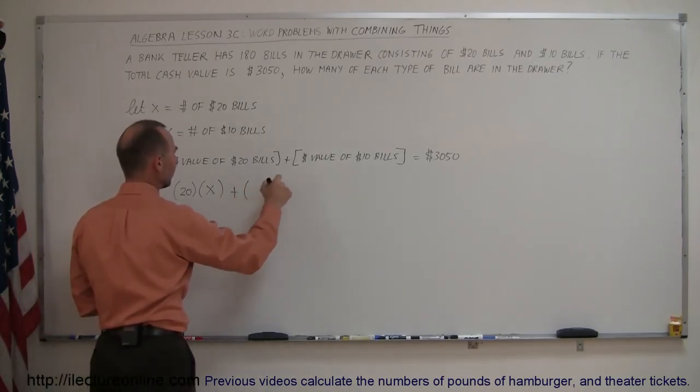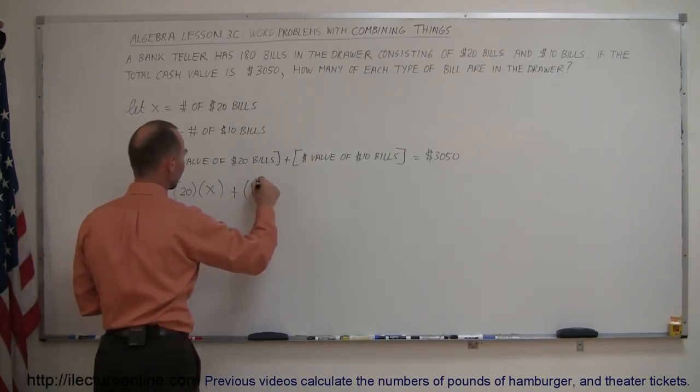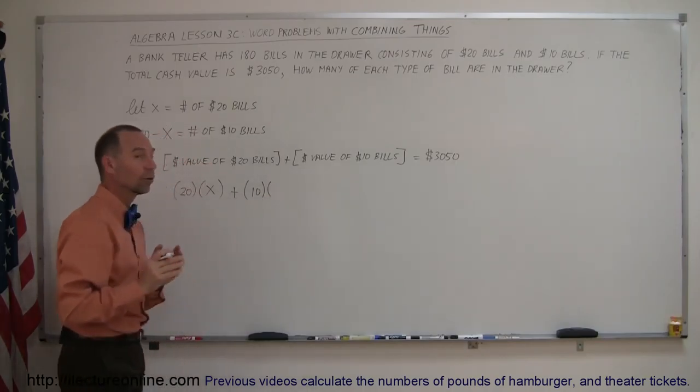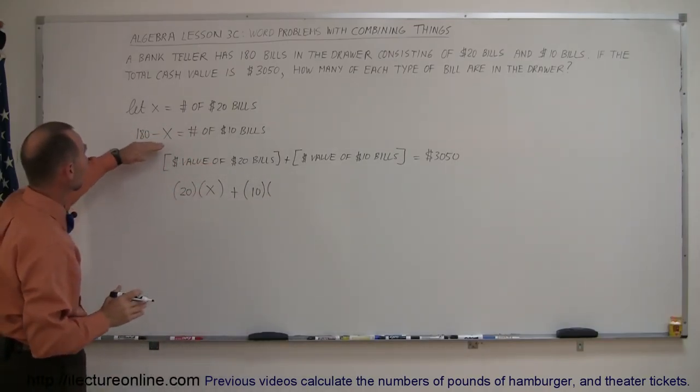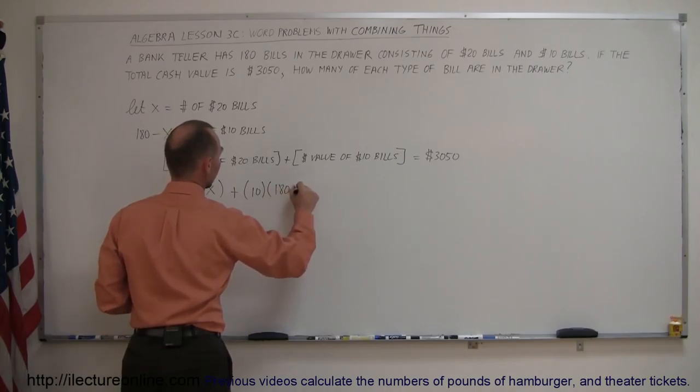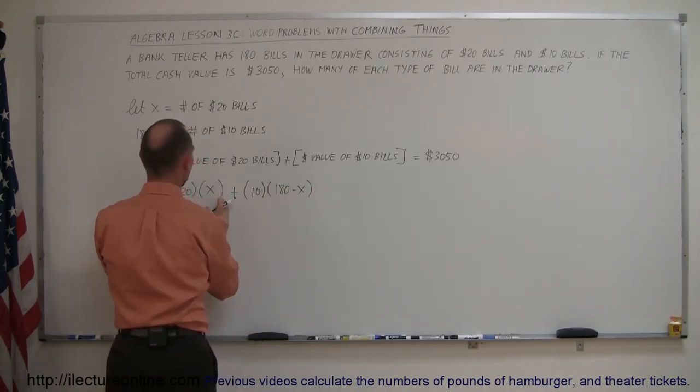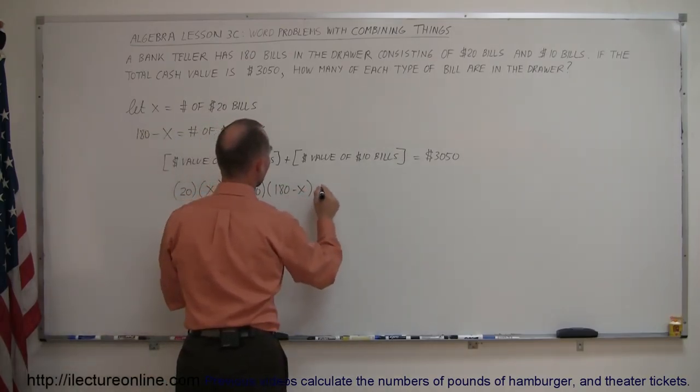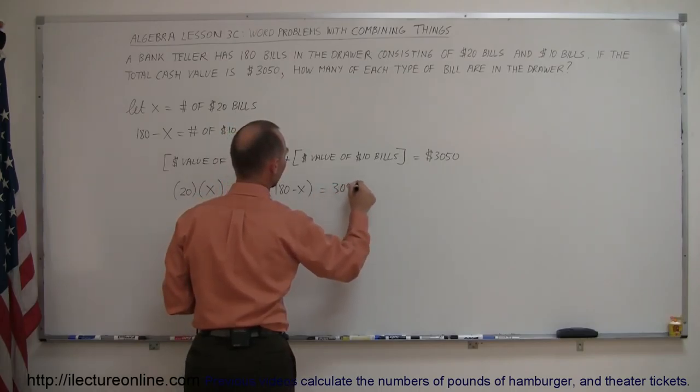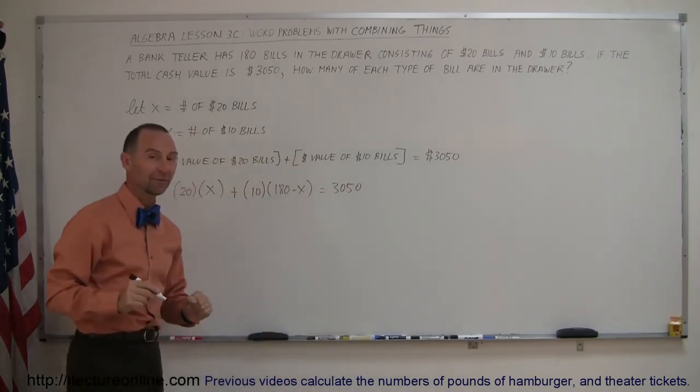Add to that the value of the $10 bills, which is $10, times the number of $10 bills that we have, which is 180 minus x. And so the value of the $20 bills plus the value of the $10 bills must add up to the total value for all the bills of $3,050.